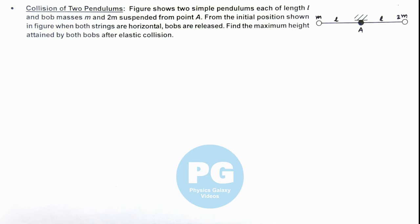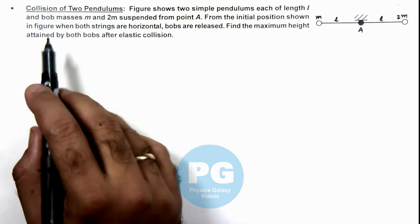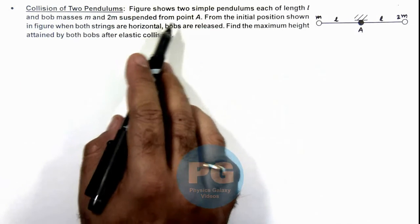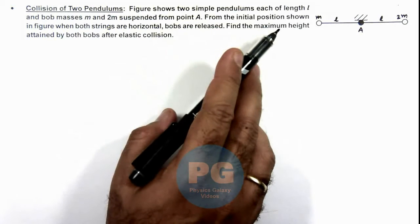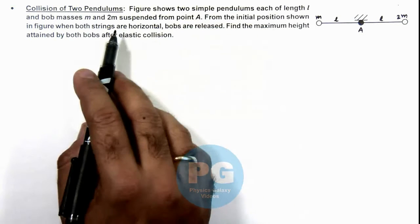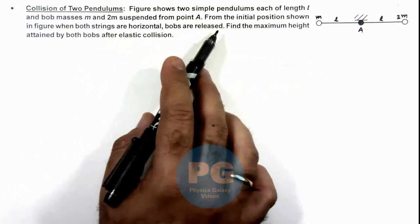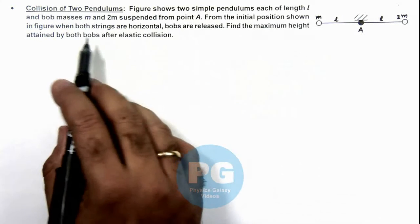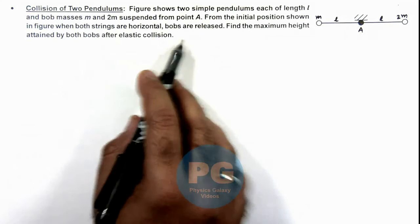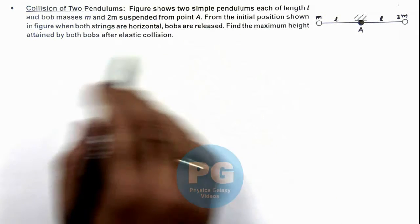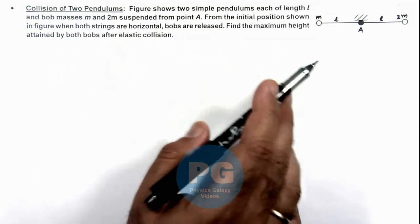In this illustration, we'll discuss the collision of two pendulums. The figure shows two simple pendulums each of length l and bob masses m and 2m suspended from point A. From the initial position shown in figure when both strings are horizontal, the bobs are released. We are required to find the maximum height attained by both bobs after elastic collision.